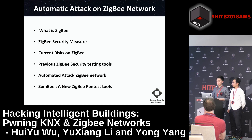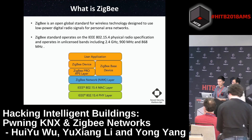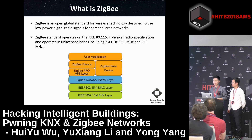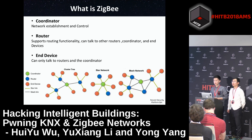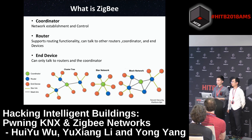The next part talks about automatic attacks on ZigBee networks, divided into six parts. ZigBee is one of the main protocols in home automation. ZigBee is an open global standard for wireless technology designed to use low-power digital radio signals for personal area networks. ZigBee supports three types of network topologies: cluster, star network, and mesh network. Its device types include the coordinator, router, and end device.